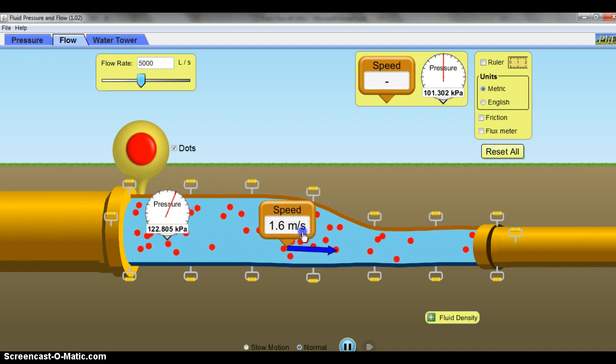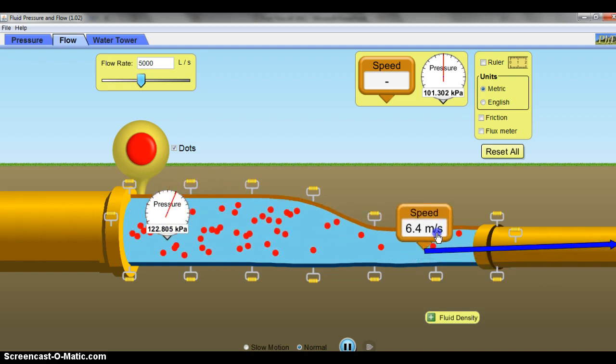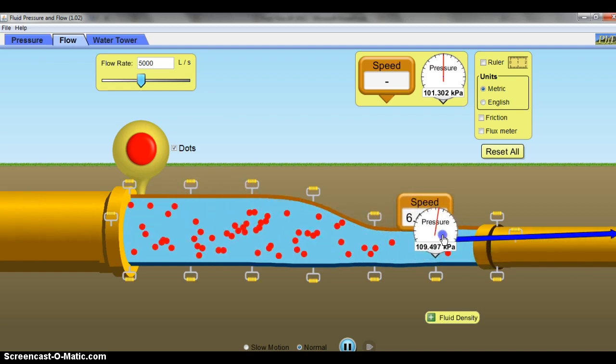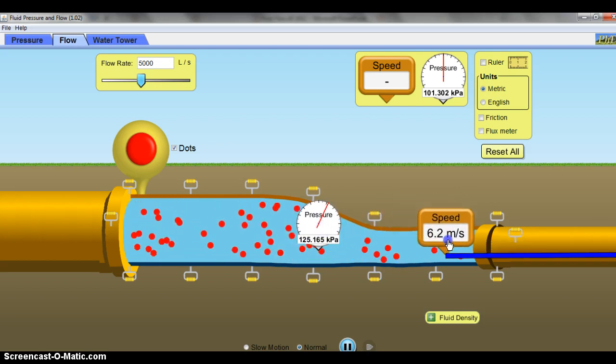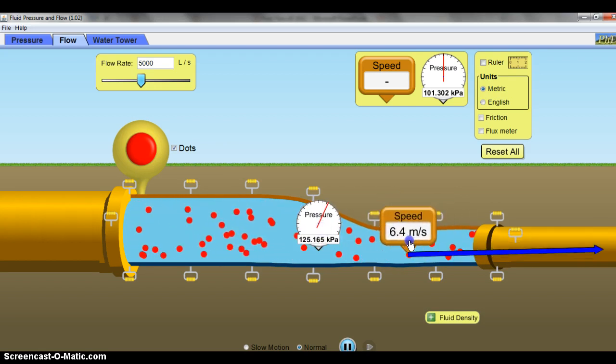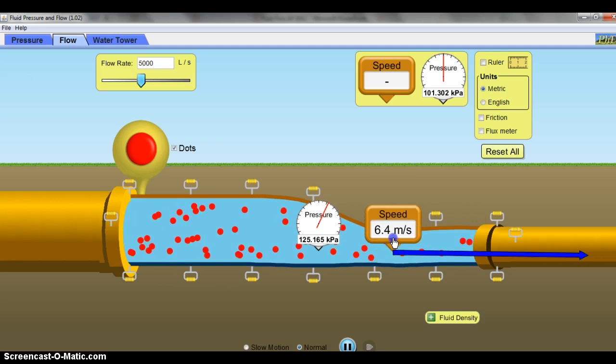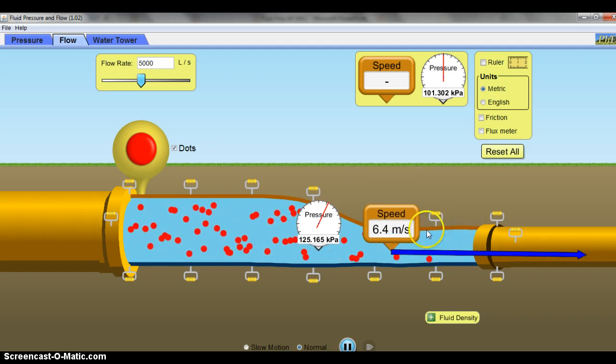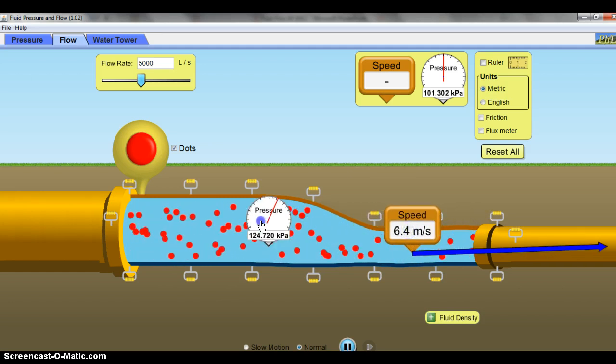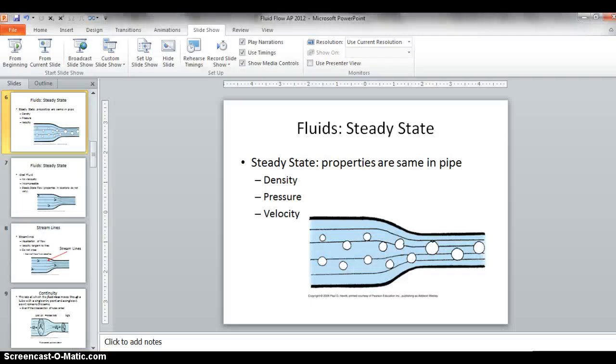So, steady state means that if you see the speed in this whole area, it's the same. Also, you'll see that the pressure within the same height stays the same. And that's what we'll do here. You'll see that the speed does change over here, but in this area, this speed is roughly the same. That's what steady state means.